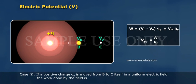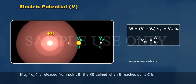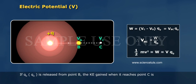If Q naught is released from point B, the KE gained when it reaches point C is 1 by 2 MV square is equal to W is equal to V Q naught.